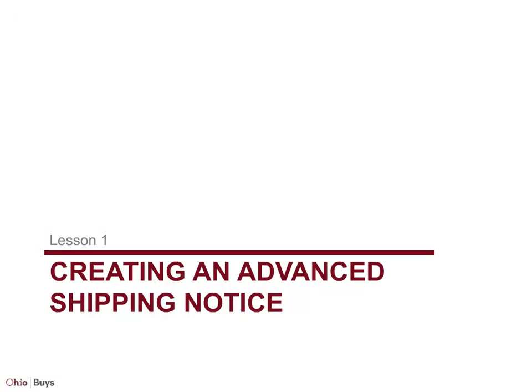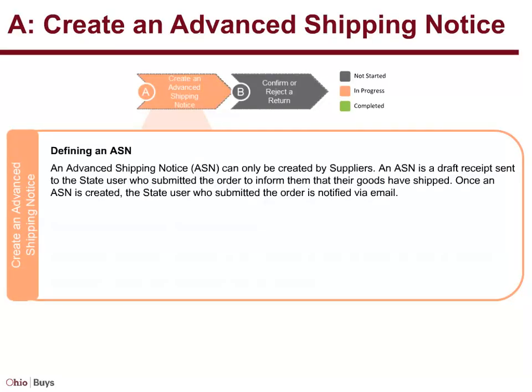Lesson 1: Creating an Advanced Shipping Notice. An Advanced Shipping Notice can only be created by suppliers. An ASN is a draft receipt sent to the state user who submitted the order to inform them that their goods have shipped.